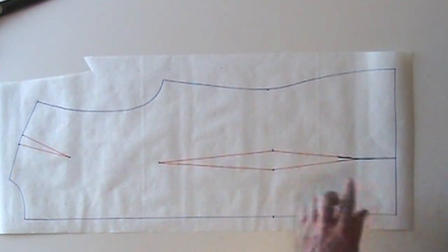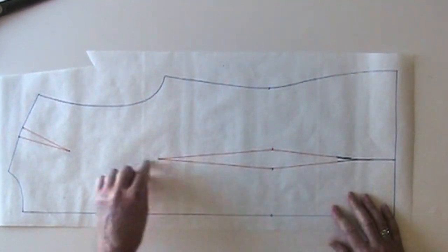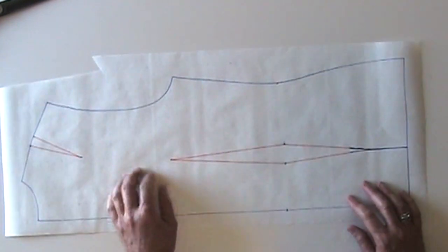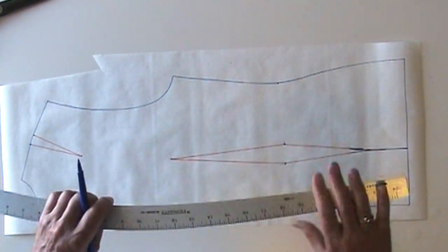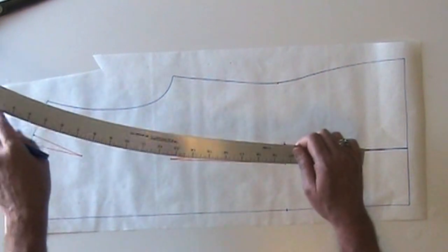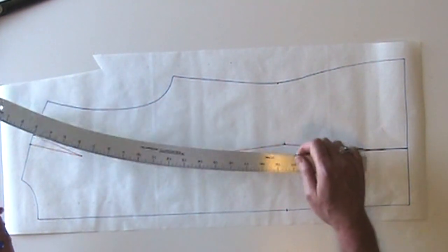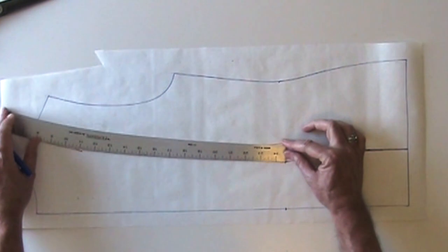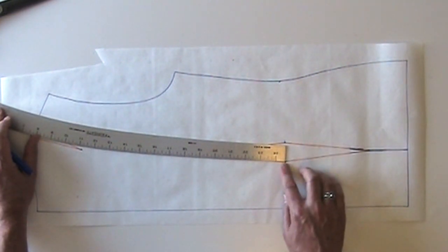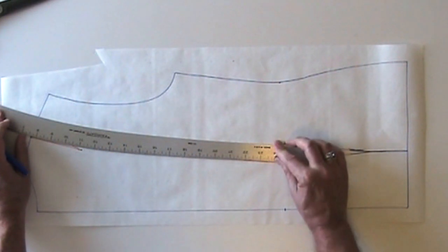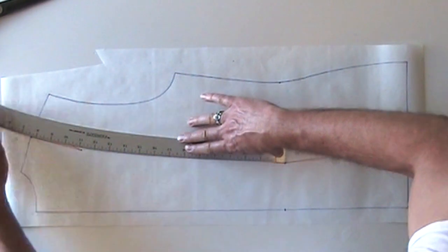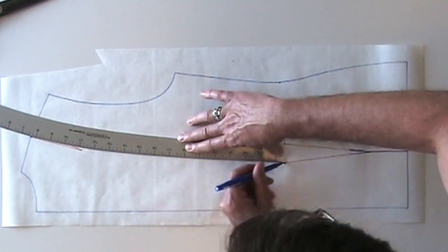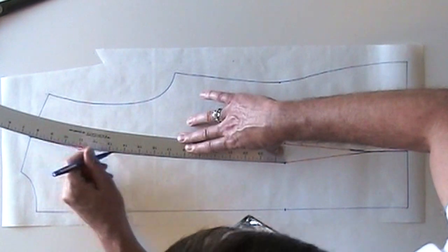Then I need to connect the waist dart to the shoulder dart. In this case, I've already got the shoulder dart at the shoulder. I didn't have to rotate it. If you happen to have a very gradual curve, like this hip curve, you might find that useful. I'm going to line it up at the waist point and then at the shoulder point, and then just draw a gradual curved line.